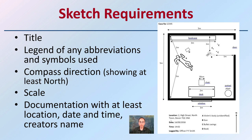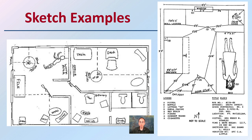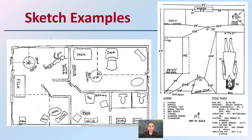General requirements for sketches: you need to have a title, a legend for any abbreviations or symbols used, compass direction showing at least the northern direction, a scale, and documentation with at least location, date, time, and the creator's name. Make sure these are present in any sketches created. Always be sure to document important pieces of evidence found, entry points, exit points, and distances.